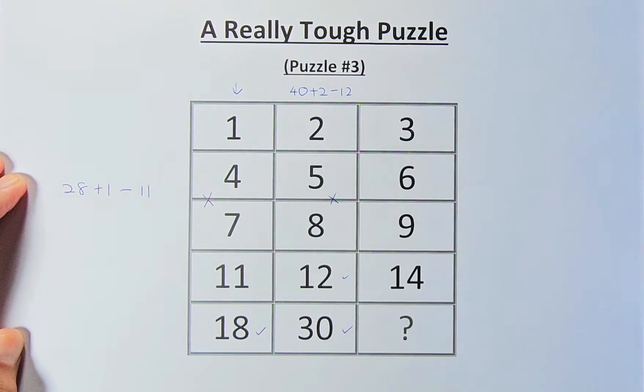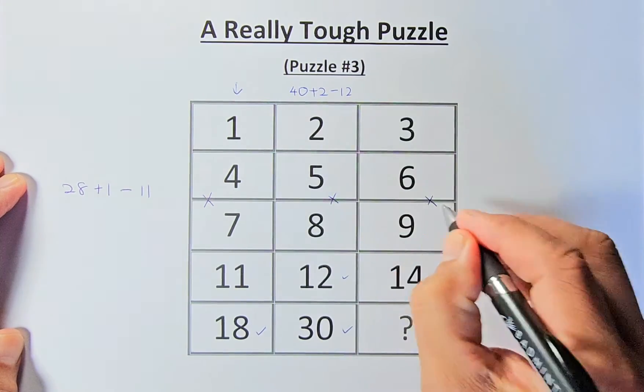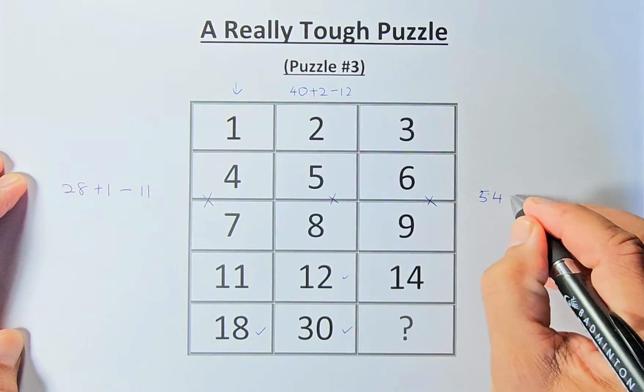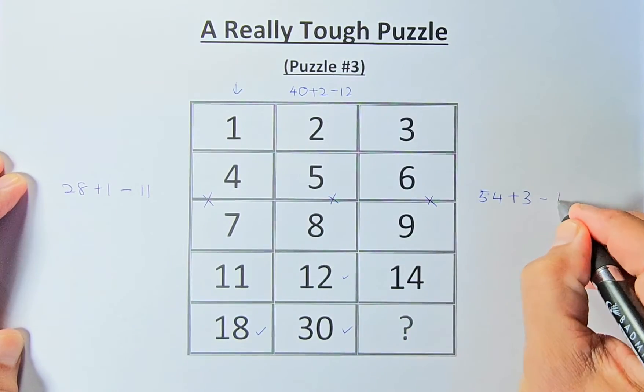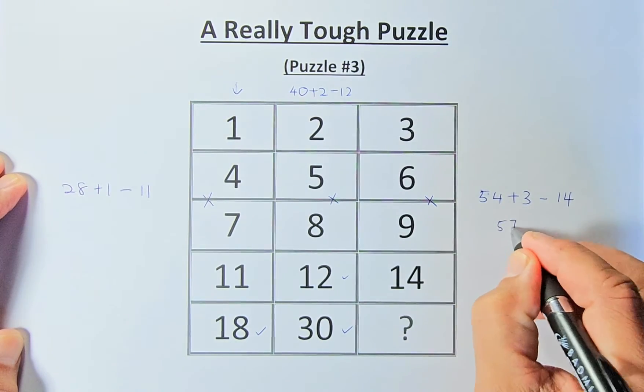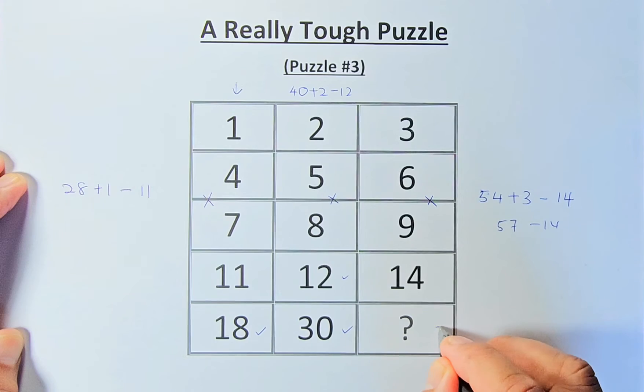So what is the question mark? 6 times 9 is 54. Then we add 3. Then we minus 14. So 54 plus 3 is 57 minus 14, and the question mark is 43.